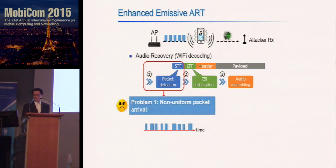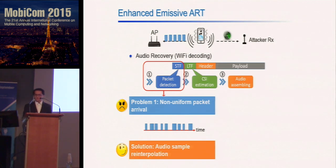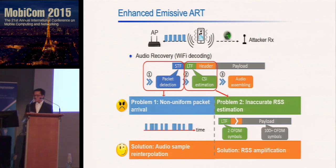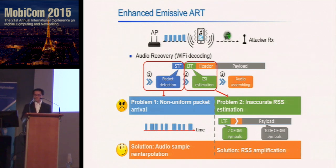However, this process has two hidden problems. The first is non-uniform packet arrival, which causes non-uniform audio sampling that significantly degrades audio quality. Fortunately, this can be solved via audio sample re-interpolation. Another problem is that the RSS estimate from the CSI is very noisy because the long training field contains only two OFDM symbols. We address this through RSS amplification — using the payload of each packet to estimate the RSS as well, since the payload contains hundreds more OFDM symbols, making it more robust and accurate.